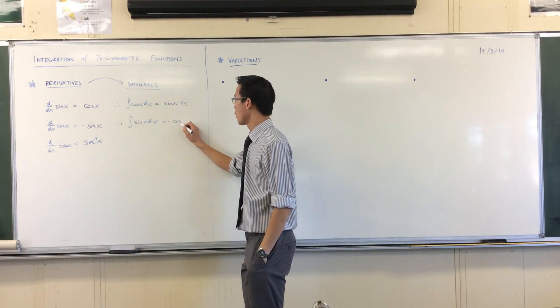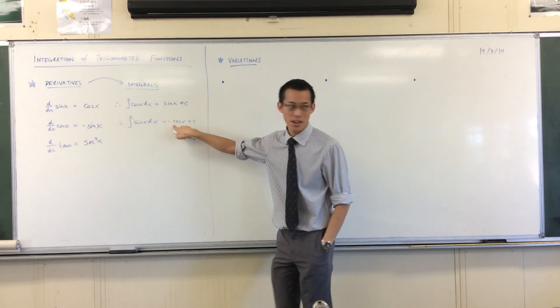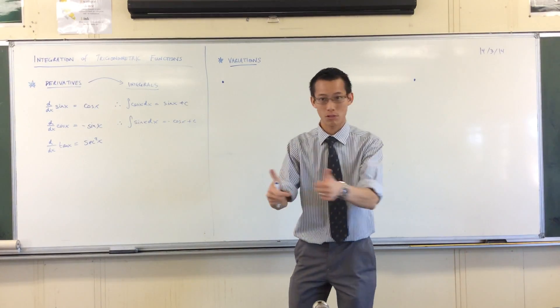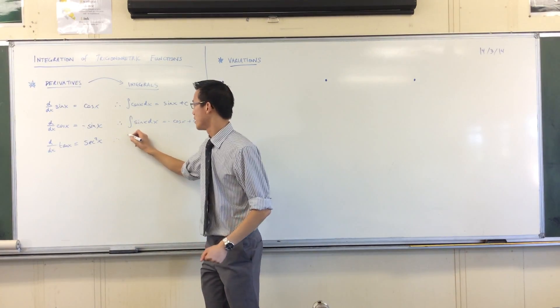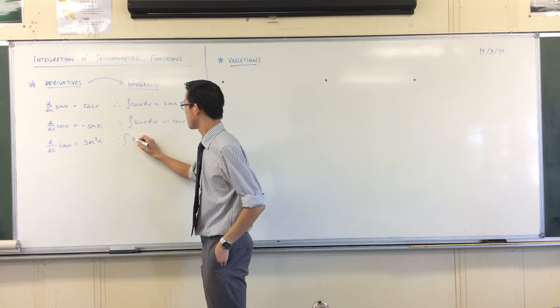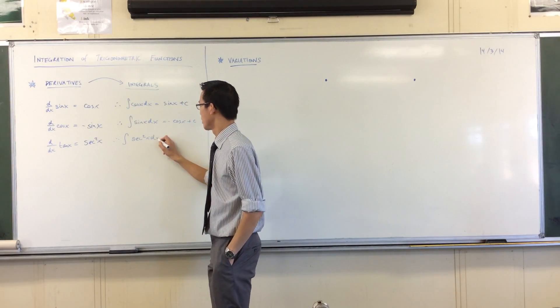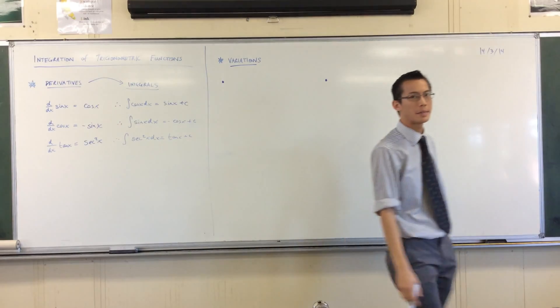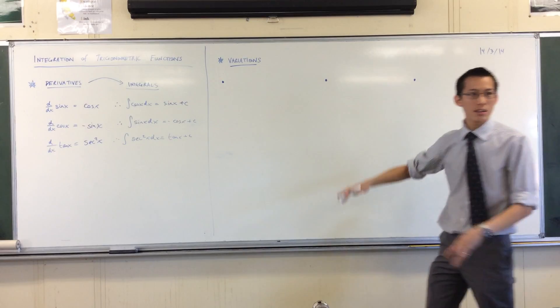And when you go the other way, the other direction, when you differentiate this, you get your negative sin and the negatives will cancel. Great. One last one. The integral of sec squared is equal to tan plus your constant. So nothing too dramatic, right? Now, these are your basic results.